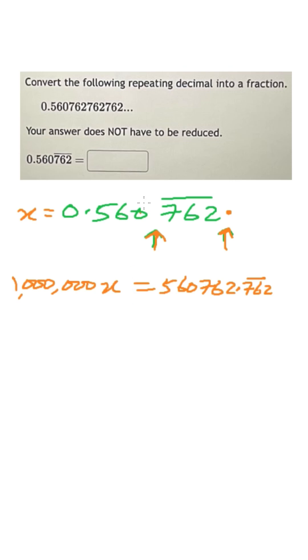And then we have to put point here, multiplied by 1000, so it will be 1000x is equal to 560.762 repeating.